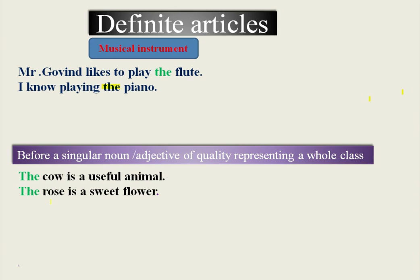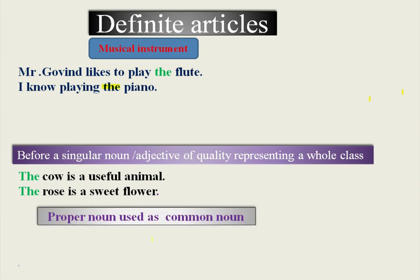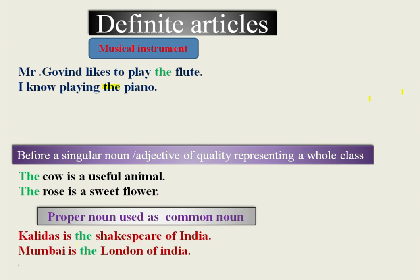But if you say 'There is a rose on the table,' you are speaking about only one rose. Proper nouns don't normally need determiners, but when you use 'THE' before a proper noun, it is treated as a common noun. For example, 'Kalidas is the Shakespeare of India.' Here, 'Kalidas' is a proper noun, but 'the Shakespeare' is used as a common noun — referring not to Shakespeare's physical form, but to his spirit and poetic talent, which is similar to Kalidas.